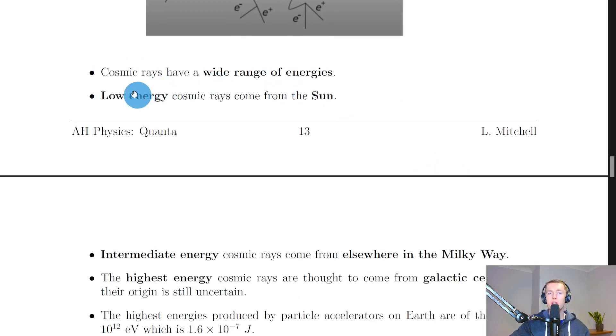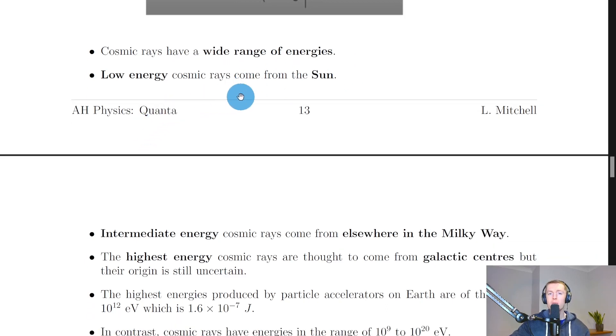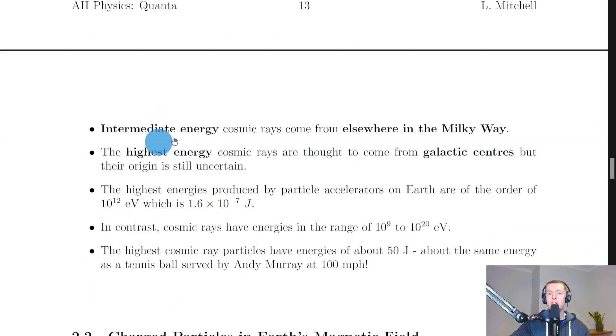see that on the topic of energy, we say that cosmic rays have a wide range of energies. Low energy cosmic rays are thought to come from the sun. Intermediate energy cosmic rays come from elsewhere in the Milky Way. But the highest energy cosmic rays are thought to come from galactic centers, but their origin is still uncertain.